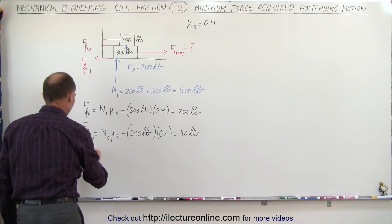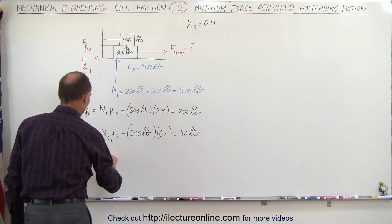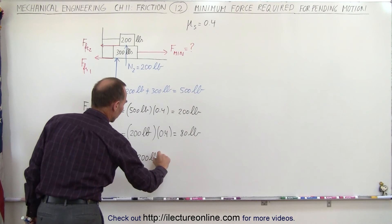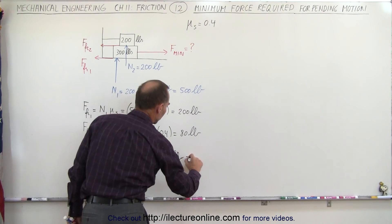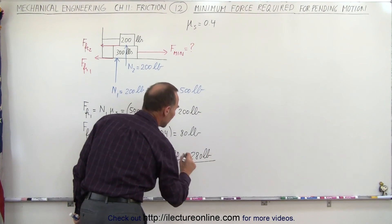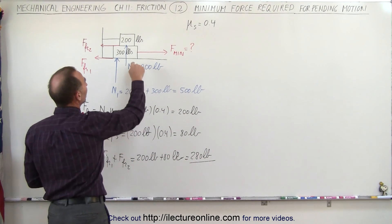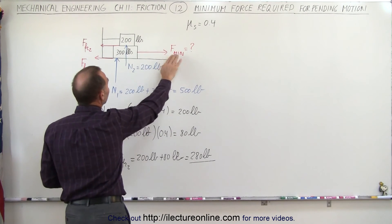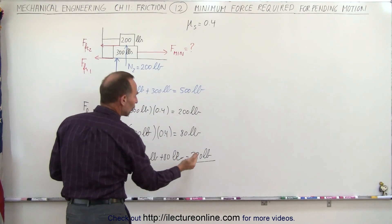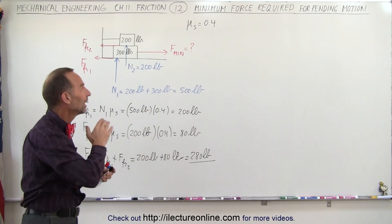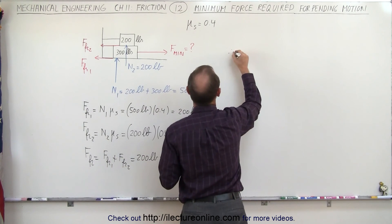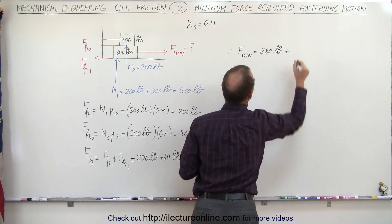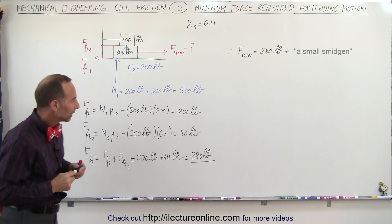The total friction is equal to friction force 1 plus friction force 2, which is 200 pounds plus 80 pounds, which is 280 pounds. That's the maximum friction in total between this block and the surface and between the two blocks. Therefore the minimum force required to get everything moving is at least 280 pounds plus a small amount to get things to move — so the minimum force required is 280 pounds, and then the whole thing will begin to move.